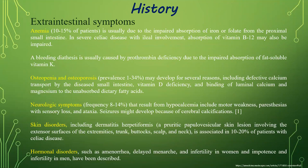Extra-intestinal symptoms: anemia is usually due to impaired absorption of iron or folate from the proximal small intestine. In severe celiac disease with ileal involvement, absorption of vitamin B12 may also be impaired. Bleeding diathesis is usually caused by protein or vitamin K deficiency due to impaired absorption of fat-soluble vitamins. Osteopenia and osteoporosis may develop for several reasons including defective calcium transport by the diseased small intestine, magnesium deficiency, and binding of luminal calcium and magnesium to unabsorbed dietary fatty acids.